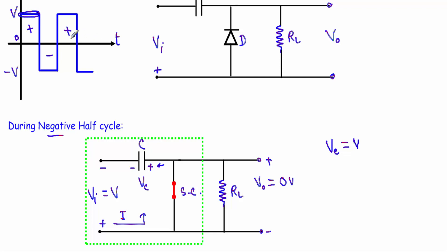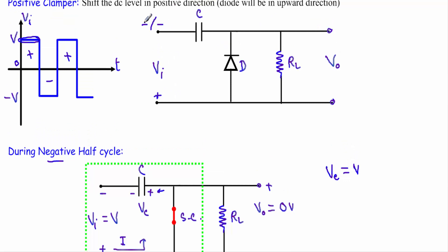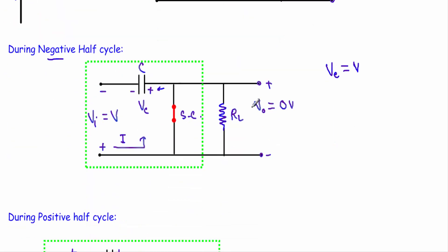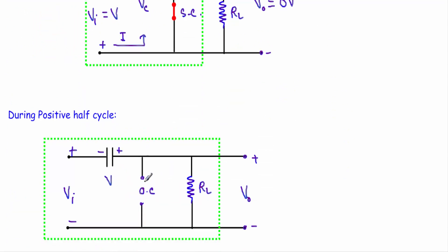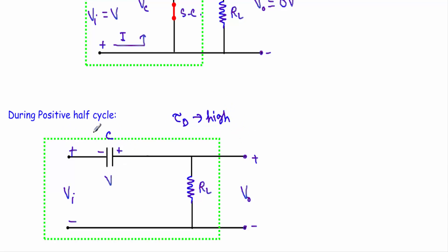Now consider the positive half cycle. In the positive half cycle, this terminal is positive and this terminal is negative, so the diode will be in reverse bias. I replace the diode with an open circuit, eliminating that branch from our circuit. The capacitor and load resistor values are chosen such that the discharging time constant is very high, so the capacitor holds voltage V across it throughout the positive half cycle of the input voltage.